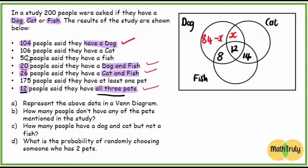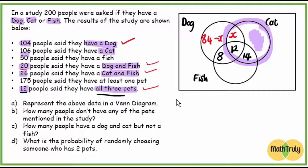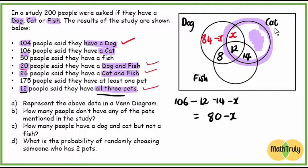Next, 106 people say they have a cat — that's the entire cat circle. To find cat only, we say 106 minus 12 minus 14 minus X, and that gives us 80 minus X. So 80 minus X people have a cat only.